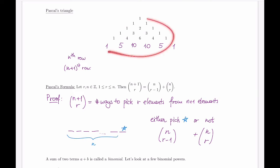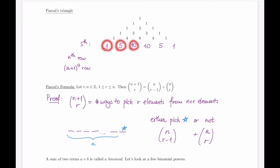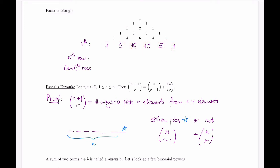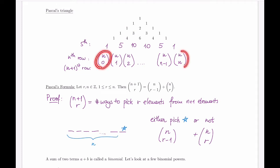Now let's see what this means for the actual triangle. Looking closely at a row — for example, row number five — these are actually combinations: five choose zero, five choose one, five choose two, five choose three, five choose four, and five choose five. So the nth row is always n choose 0, n choose 1, n choose 2, and so on, all the way to n choose n. This is consistent with the ones on the ends, since n choose 0 and n choose n are both one.